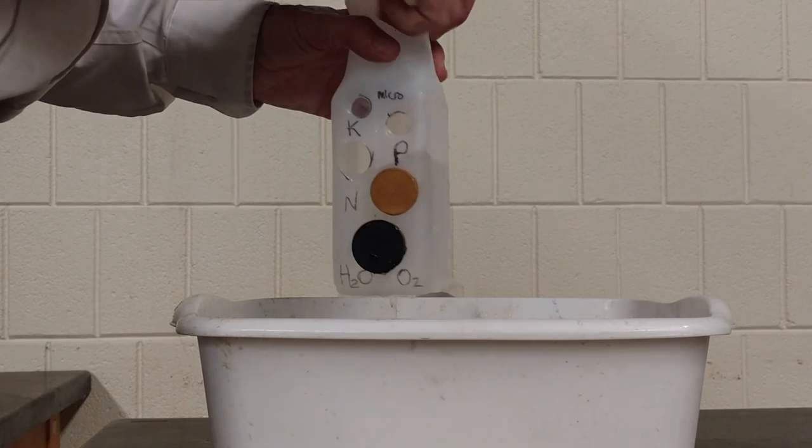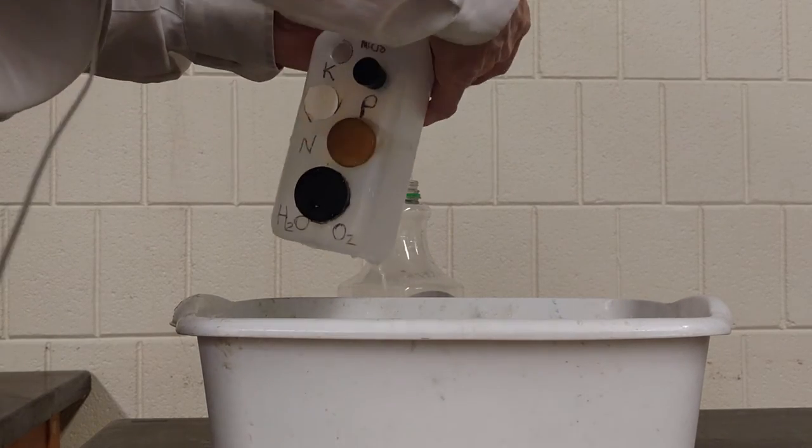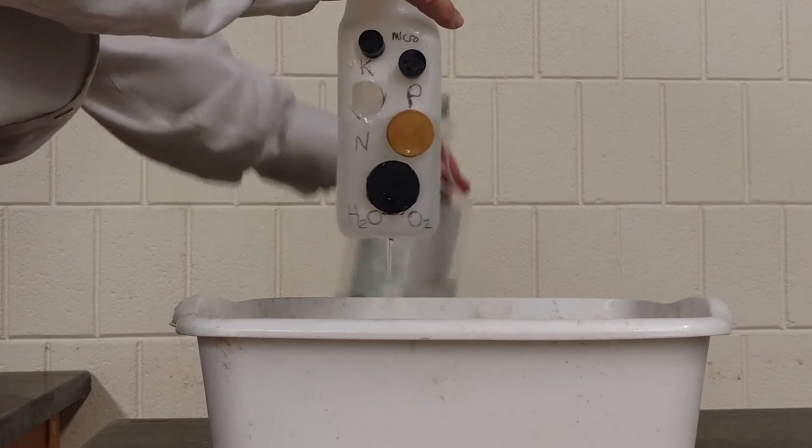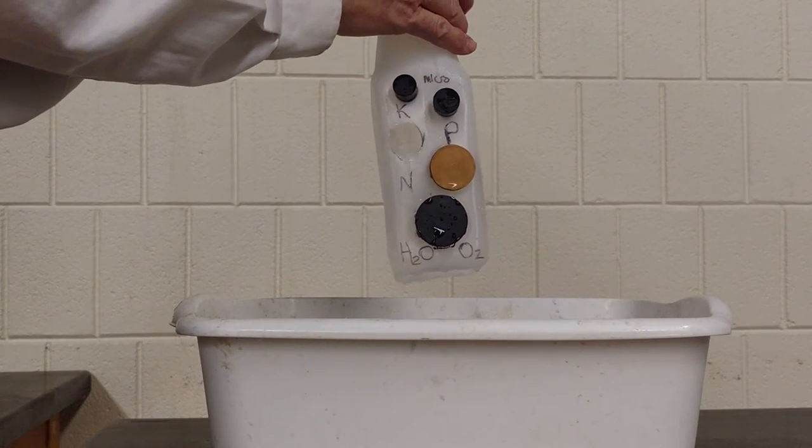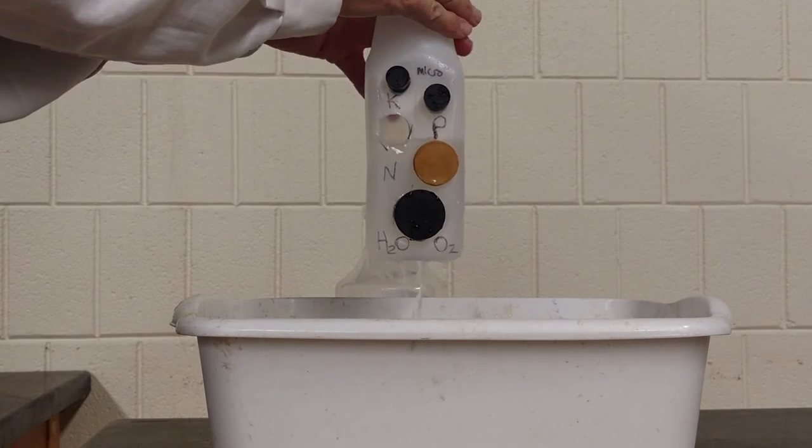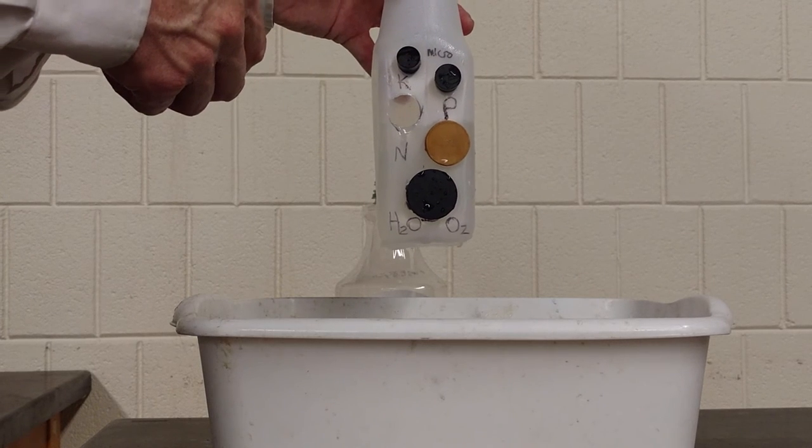Now, if phosphorus is the limiting factor, it does no good to come in with a potassium fertilizer or with a micronutrient application because those are not the limiting factors for plant growth. As long as phosphorus is the most limiting factor, adding additional nutrients of other sorts is not going to increase the plant yield.